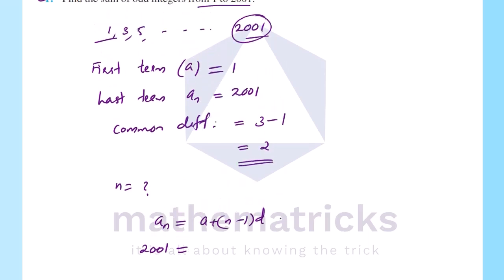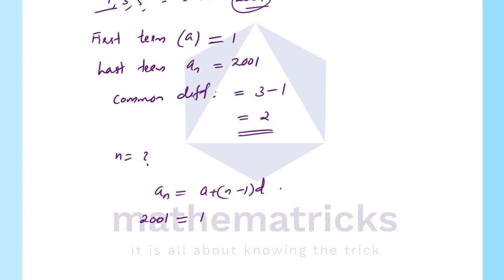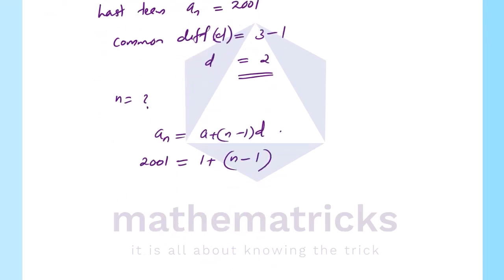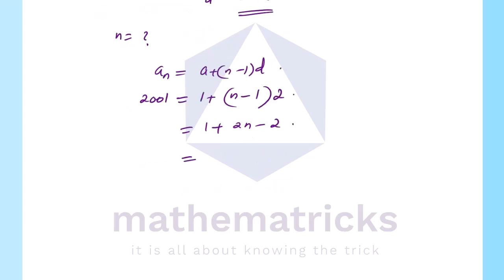The nth term a_n equals a plus n minus 1 into d, where d is the common difference. Here d equals 2. That is equal to 1 plus 2n minus 2, which equals 2n minus 1, because 1 minus 2 gives 2n minus 1.